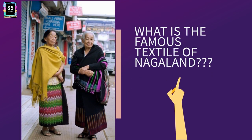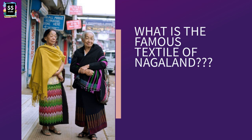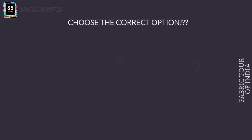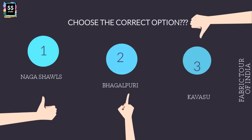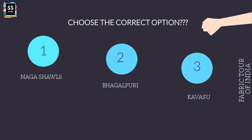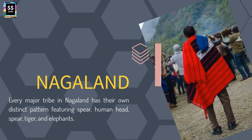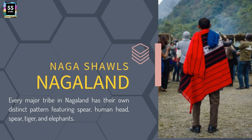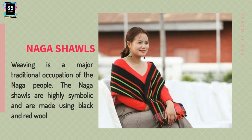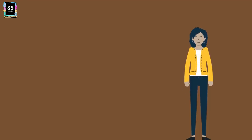State 7: Which is the famous textile of Nagaland? Is it the shawl, the skirt, or the top? As the picture suggests, the options are Naga Shawls, Bhagalpuri, or Kassavu. It is Naga Shawls from Nagaland. They have distinct patterns featuring human heads, spears, tigers, and elephants. The wool is primarily red and black with highly symbolic elements woven onto it.